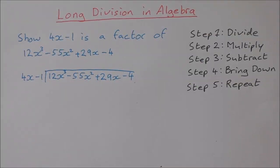In this video I'm going to show you how to do long division in algebra. We're asked a question: show that 4x minus 1 is a factor of the cubic expression 12x cubed minus 55x squared plus 29x minus 4, and we do this by dividing 4x minus 1 into the cubic expression.